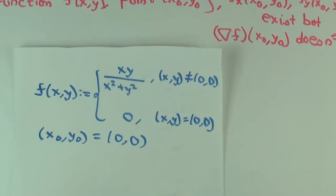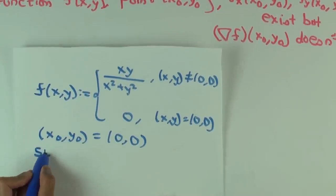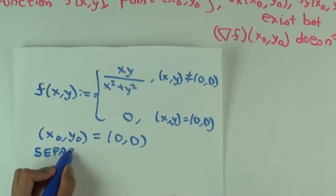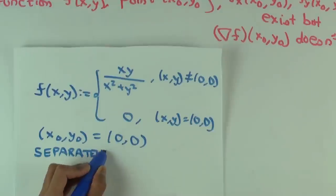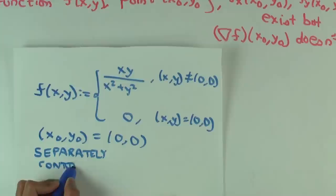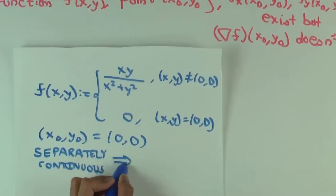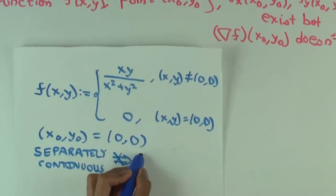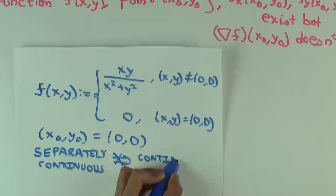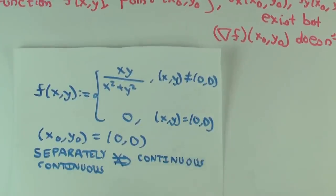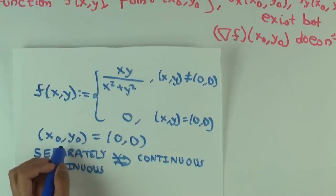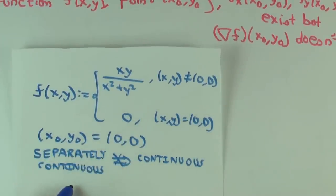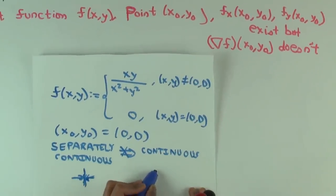Jointly continuous just means continuous in the usual sense. Separately continuous means it's continuous in the x direction and y direction — holding the other variable constant. Continuity means jointly continuous in both variables: if the point is close to this point, the function value will also be close. You're not just approaching along the x and y directions — continuity is approaching from anything close by.